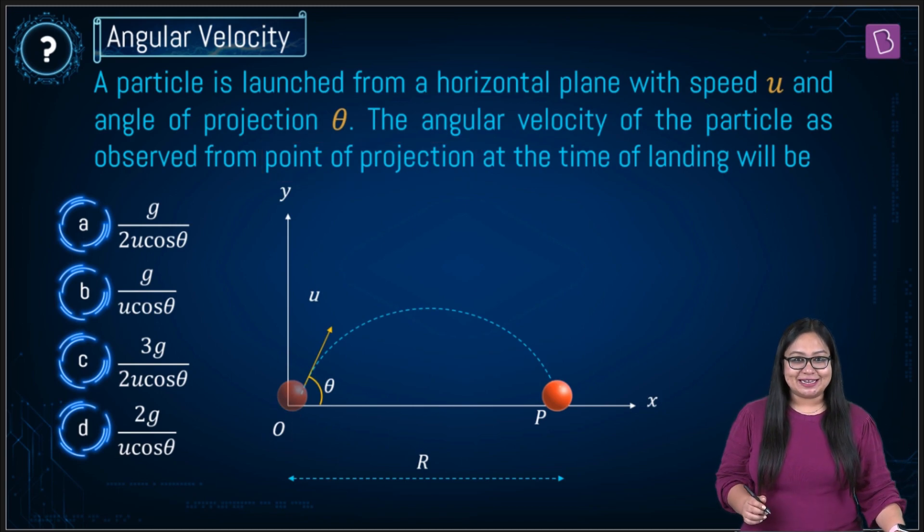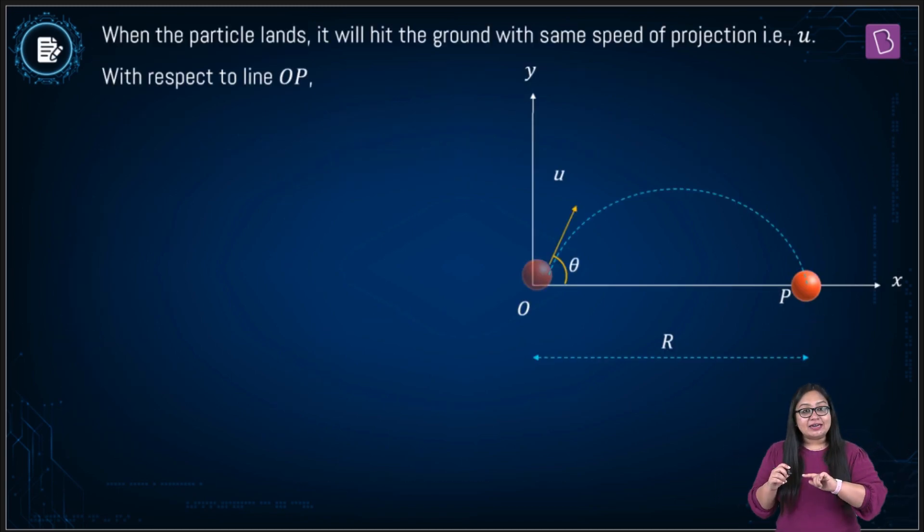So let's see. At the time of landing, it is going to land with the same speed with which it was projected. So velocity of landing becomes u at an angle theta with horizontal.